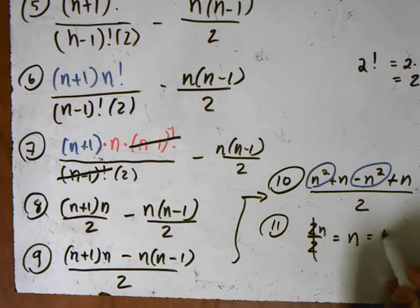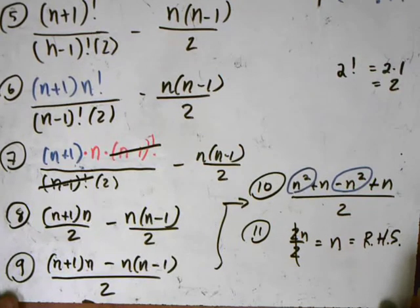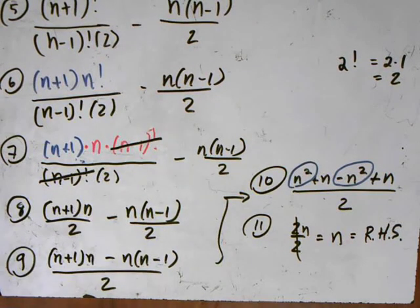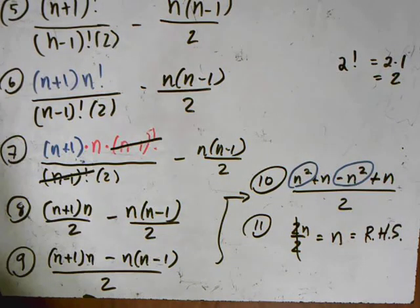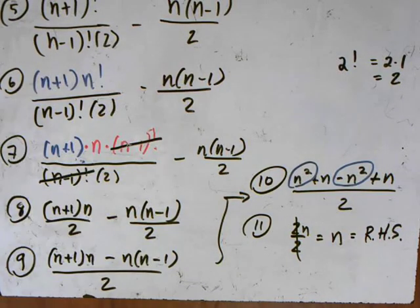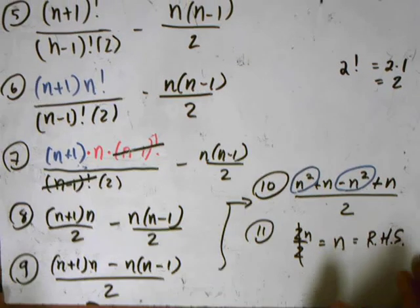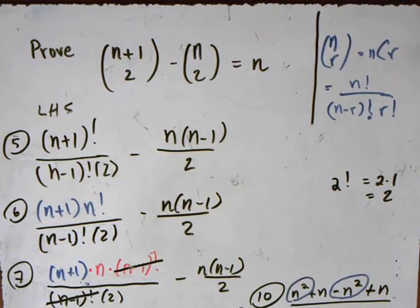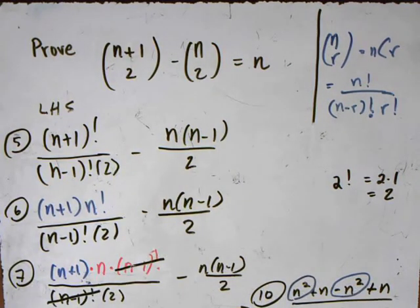The 2's cancel, which equals the right-hand side of our proof. The main idea of this entire proof is using the factorial identity so that we have the same factorial expression on the numerator and denominator, allowing us to cancel it out. We want to remove the factorials from our expression, leaving us with just a basic algebraic expression. This is a proof using combinations that applies the factorial identity multiple times.